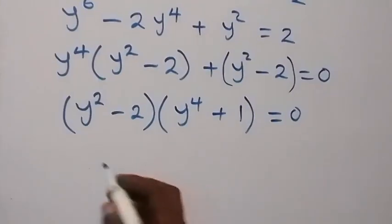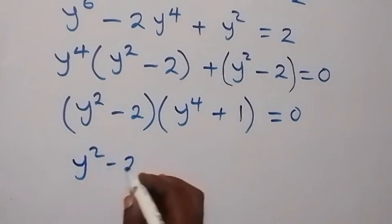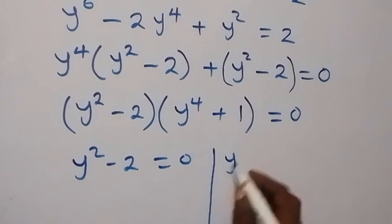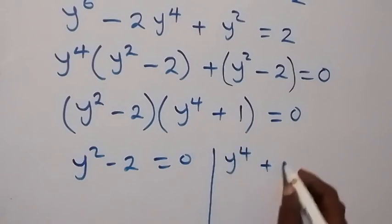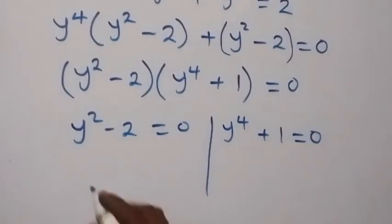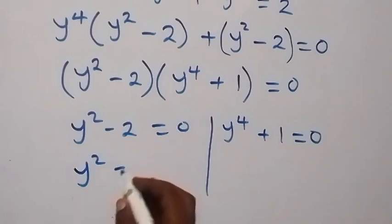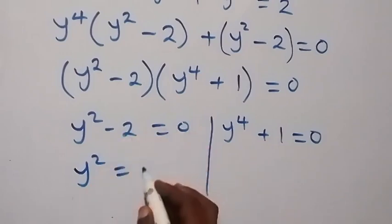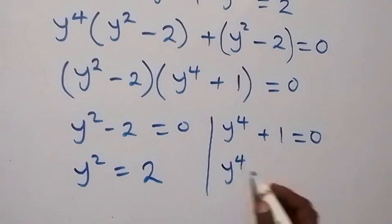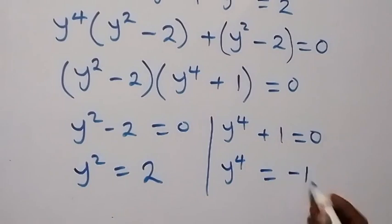And here we have two cases: we have y squared minus 2 equals to 0, or we have y raised to power 4 plus 1 equals to 0. From the first case, y squared equals 2. From the second case, y raised to power 4 equals minus 1.